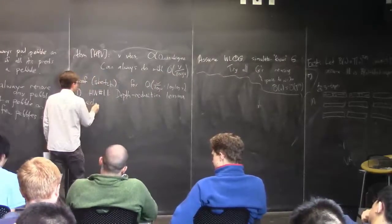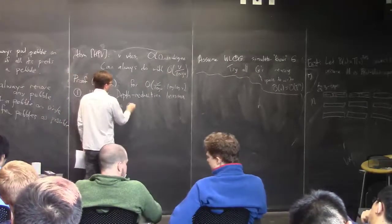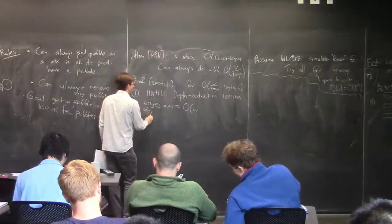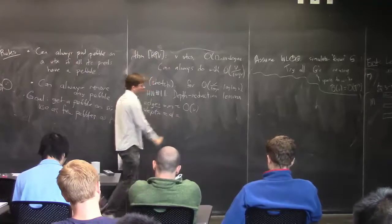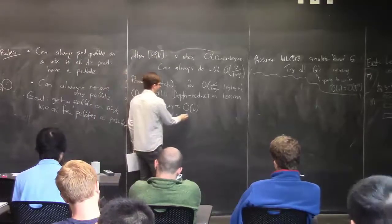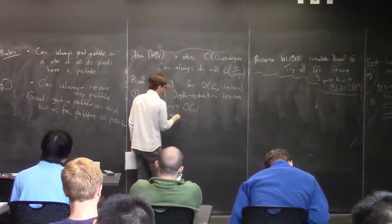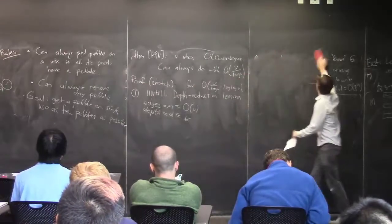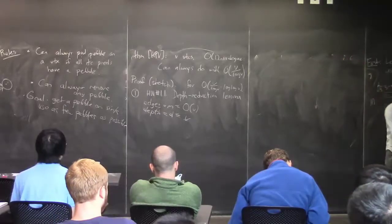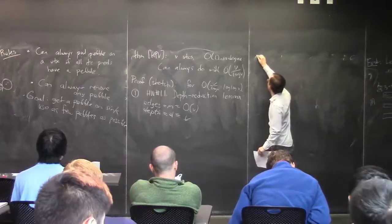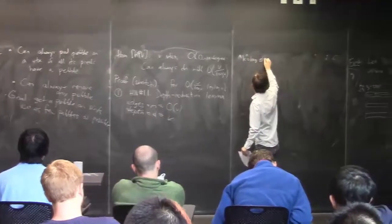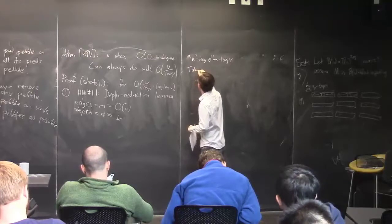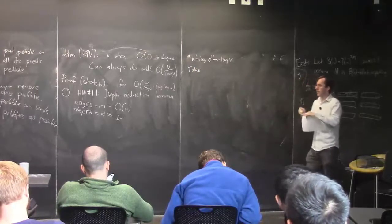So applying the homework lemma: the graph has M = O(V) edges (constant in-degree), initial depth D = O(V). We set the parameter K = log V and choose R = log K = log log V. Then the lemma tells us: by deleting O(R/K × M) = O(V · log log V / log V) vertices, we can reduce the depth to D / 2^R = D / K = O(V / log V). So both the number of deleted vertices and the resulting depth are O(V · log log V / log V).